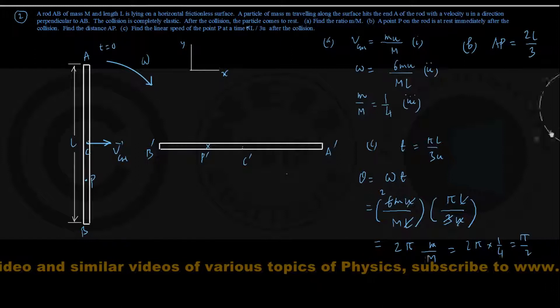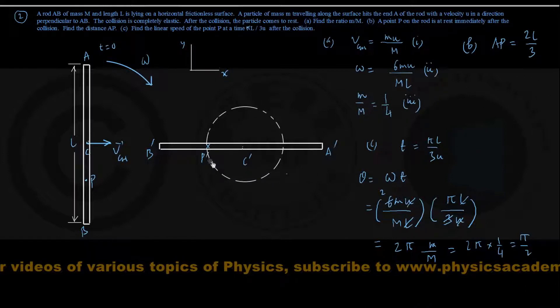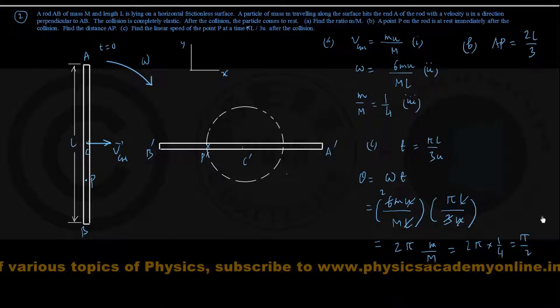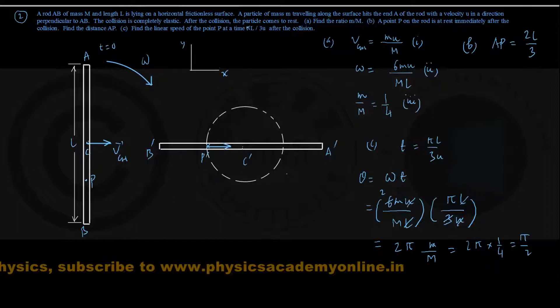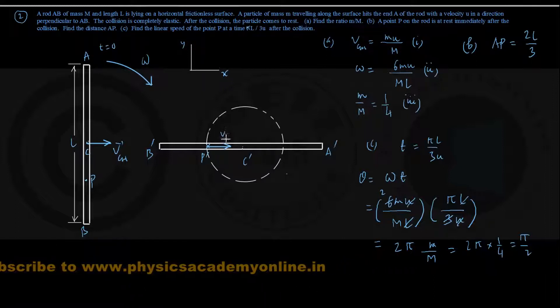As you understand, we have already said that this point P possesses two velocities. One is the velocity VCM pointing to the right, because of translational motion of center of mass.